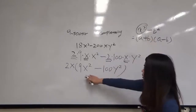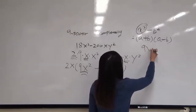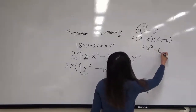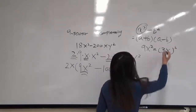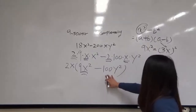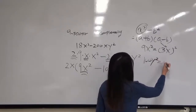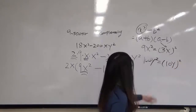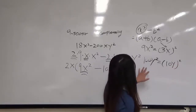So a squared here is our 9x squared. In order to get from a squared to a, we need to factor that as 3x, since 3x squared equals 9x squared. Then we have our second term which is 100y squared. We are going to factor that out as 10y, since 10 squared is 100 and y squared is y squared, so when multiplied they give 100y squared.